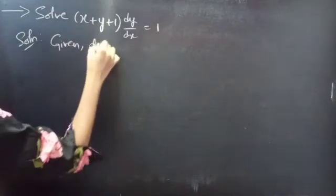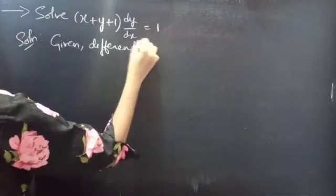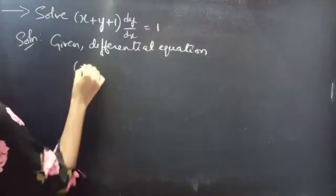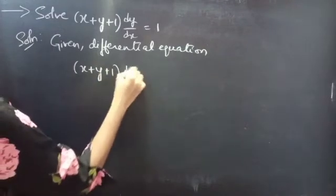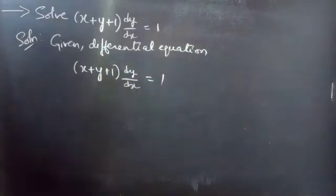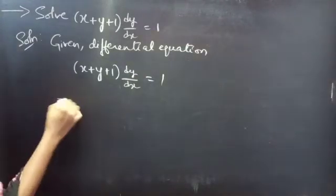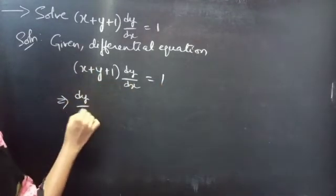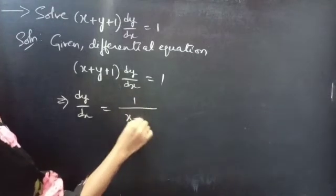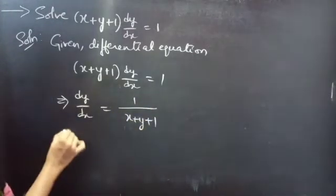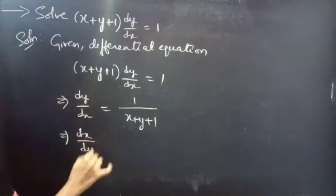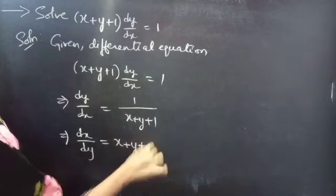Given differential equation: (x + y + 1) · dy/dx = 1. Then, taking the terms under brackets to the RHS, we get dy/dx = 1/(x + y + 1). Again, this gives dx/dy = x + y + 1.